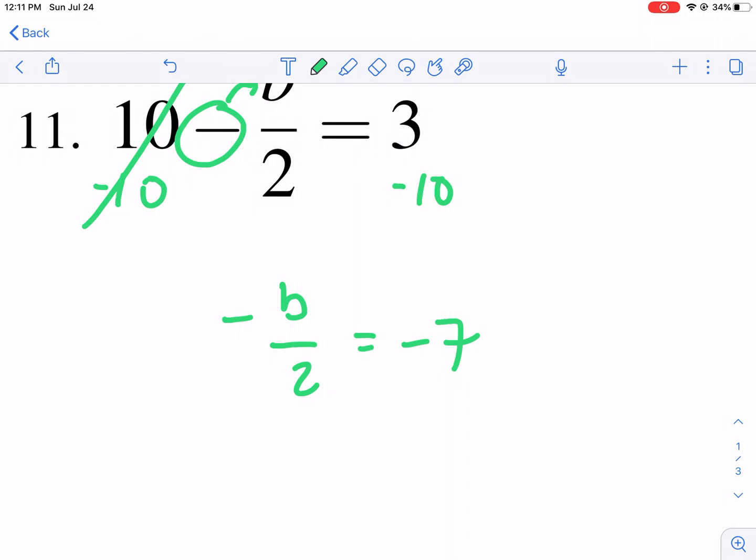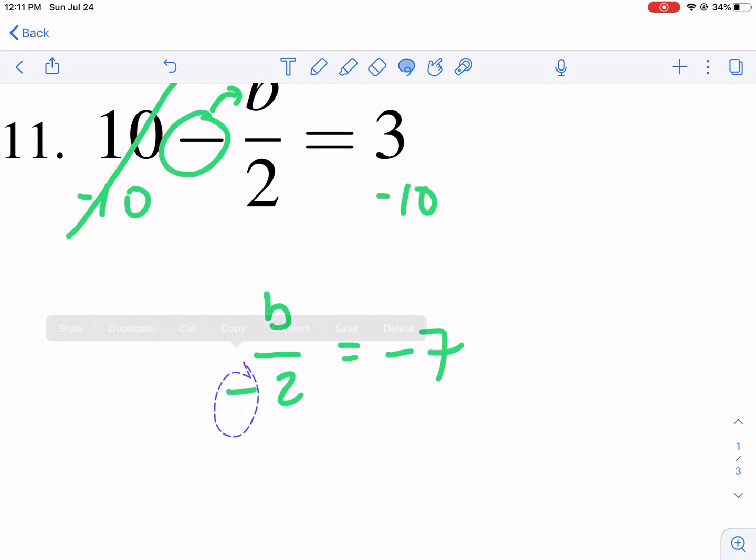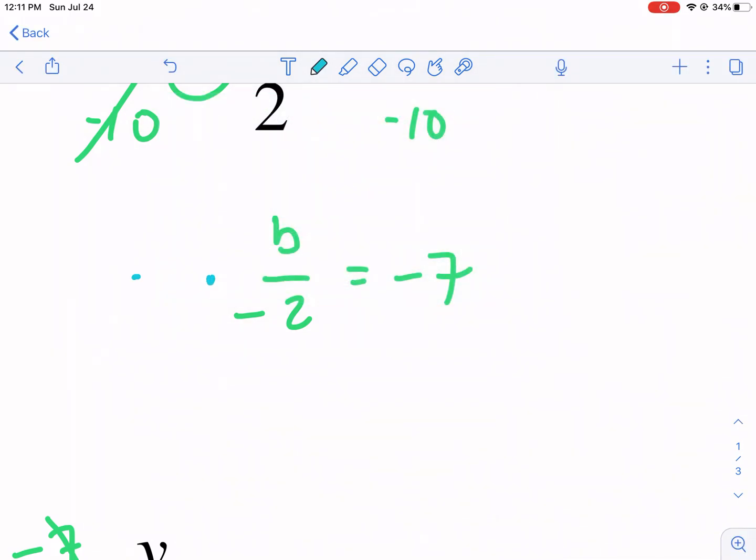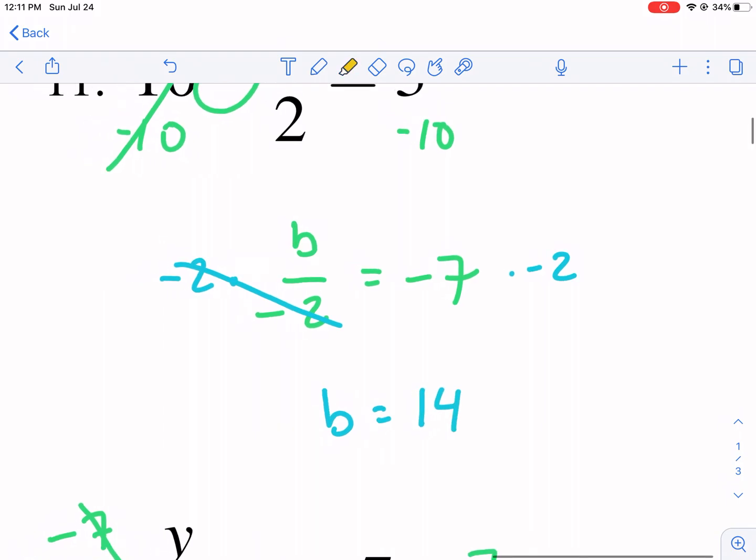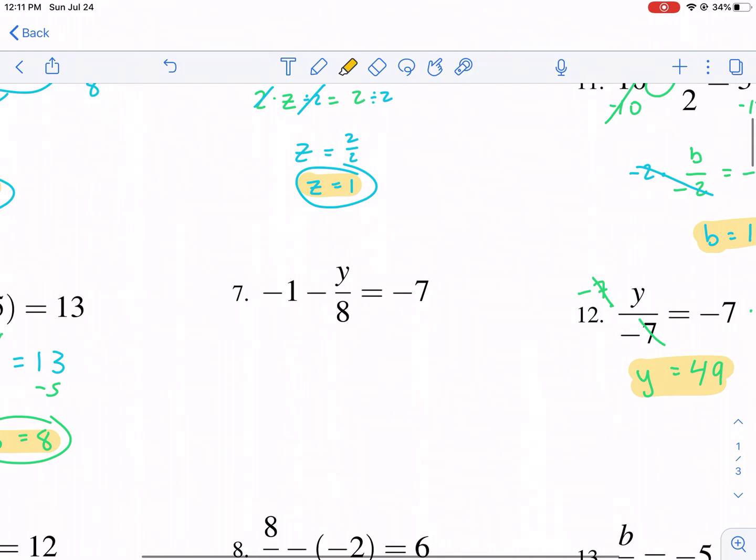I have negative b over 2. A couple different things. I like moving it to the numerator. But really, you could make this a negative 2. As long as you put it either in the numerator or denominator, it's fine. We're going to multiply it by negative 2. If we divide by negative 2, we need to do the opposite operation, which cancels it. And we get b equals negative 7 times negative 2, positive 14. So that's our answer there.